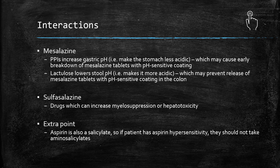In terms of interactions with mesalazine: PPIs can increase gastric pH, making the stomach less acidic, which may cause early breakdown of mesalazine, which often has a pH-sensitive coating to avoid the stomach and get as far into the intestines as possible. Lactulose lowers the stool pH — i.e. makes it more acidic — which may prevent release of the mesalazine tablets with pH-sensitive coating in the colon, since they are resistant to acid and need to reach a more alkaline area.